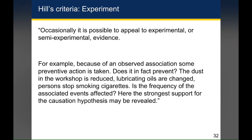Even when we have observational data, occasionally that data is collected in circumstances that resemble an experiment — what we might refer to as a natural experiment — that lets us try to look at causation. For example, imagine you are collecting quality measures for a floor in the hospital and halfway through your data collection, the hospital introduces a new policy that changes the way care is delivered to those patients. It may be possible to start looking at whether that policy impacted the quality of care, even though that wasn't your original intent.